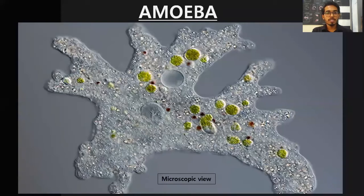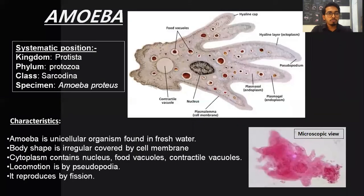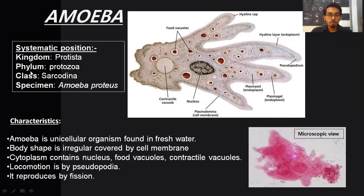The first specimen we will be studying is the amoeba. This image of the amoeba is a microscopic view and here the amoeba is without any staining — this is what amoeba looks like in a natural condition. It is transparent. The systematic position: kingdom Protista, phylum Protozoa, class Sarcodina, and the type specimen is Amoeba proteus. Amoeba is the genus name; proteus is the species name.